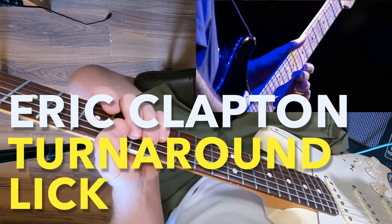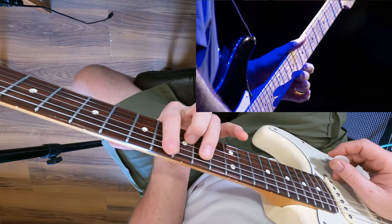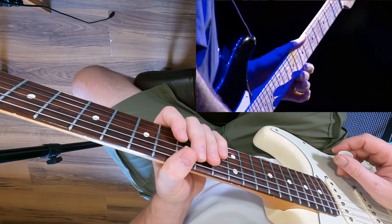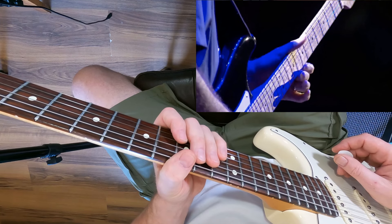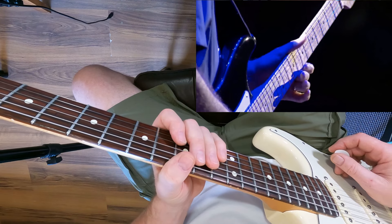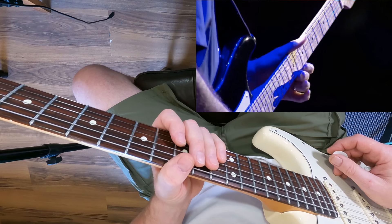A cool Eric Clapton lick today. We're in the key of C, so you can think C minor pentatonic. This is taken from the Cream reunion gig at the Royal Albert Hall in 2005. It's a turnaround lick taking you back to the five chord at the end of the progression, then you start again on the one chord.